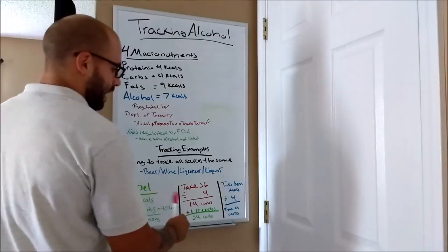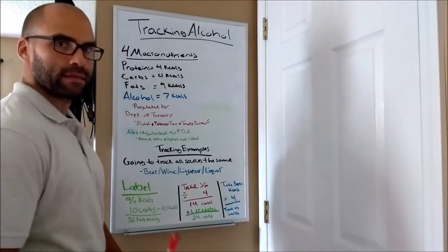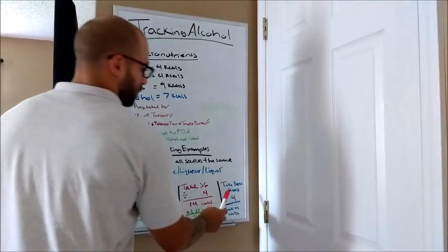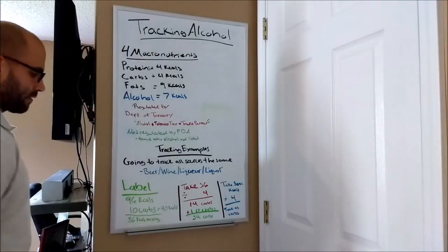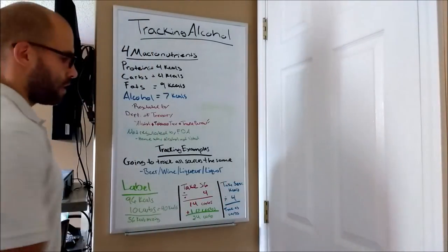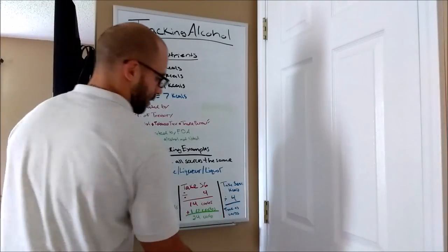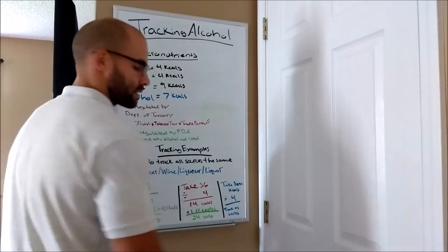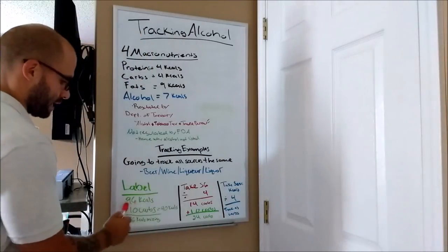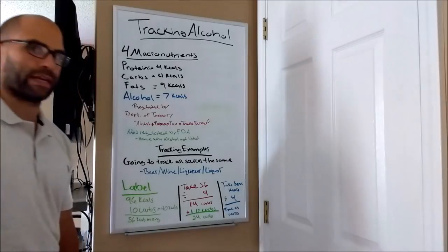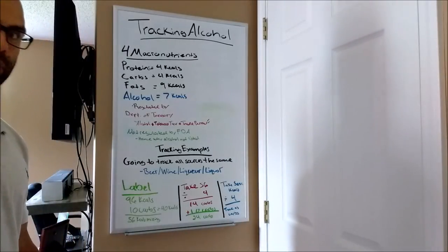So extremely at a very high level, this is what I recommend to all my clients and this is what I do. Take the servings of the kcal. So again, this whole entire can of beer is 96 calories. All we're simply going to do is take 96, divide it by four. That's how you're going to track it. You're going to track it as carb. So if you have this one can of beer, you're going to track it as 24 grams of carbs to your day-to-day intake. Simple enough.